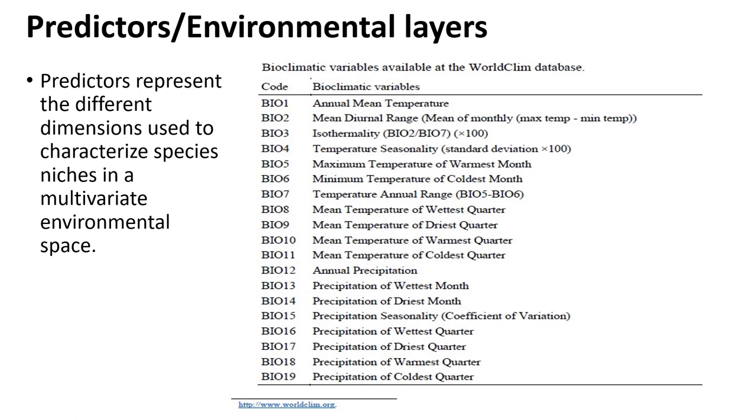And these are the data explanations from the WorldClim database. And you see here with the 19 environmental variables from Bio-1, which is the annual mean temperature, to Bio-11, those are just for temperature. And from Bio-12 to Bio-19, those are for the precipitation.